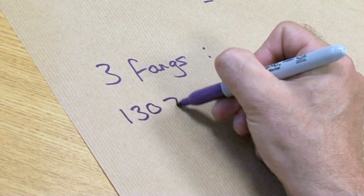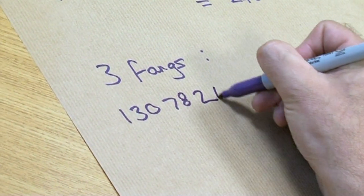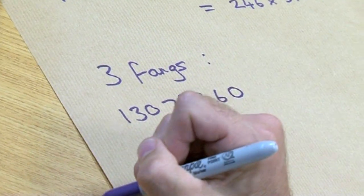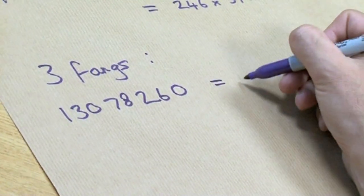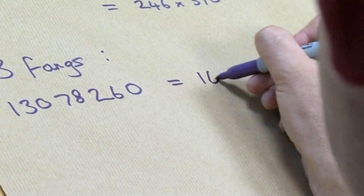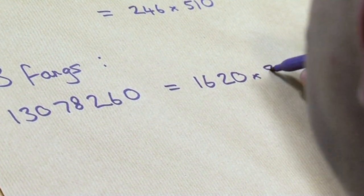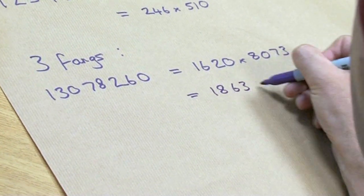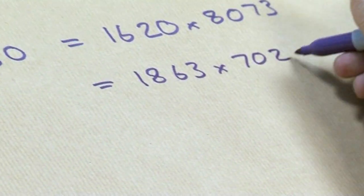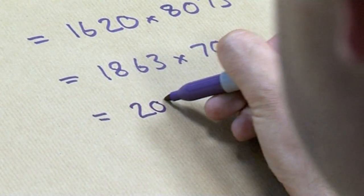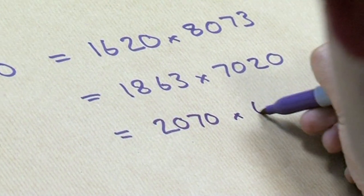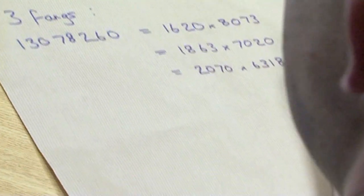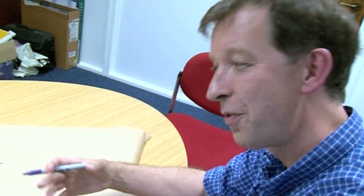There are also three-fang numbers. For example, 13,078,260 can be split as: 1620 × 8073, or 1863 × 7020, or 2070 × 6318. There are numbers with four pairs of fangs known, five pairs of fangs known — in fact, you can keep going.